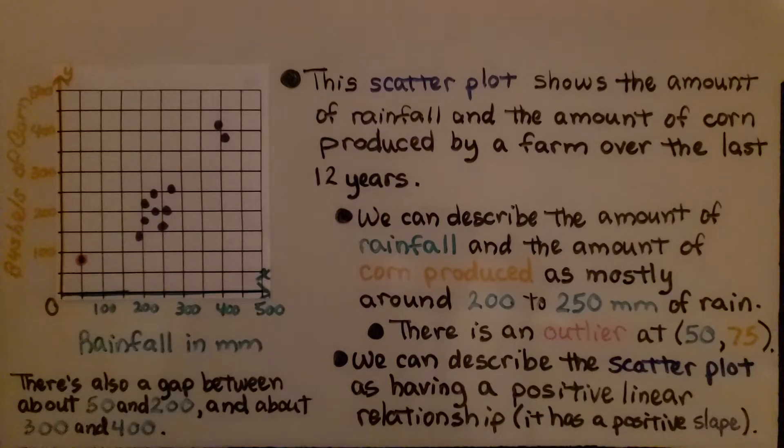Here we have a scatter plot, and if you look, it says rainfall in millimeters. And this is bushels of corn. So this is the output of the bushels of corn according to how much rain fell. It shows the amount of rainfall and the amount of corn produced by a farm over the last 12 years.